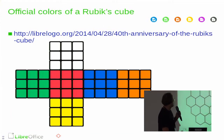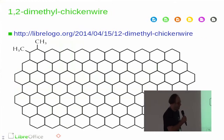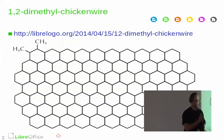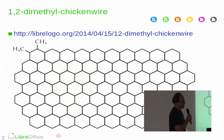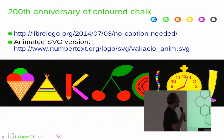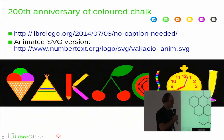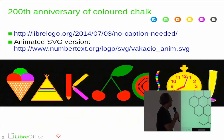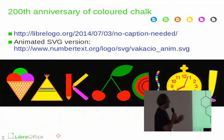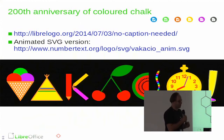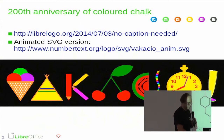Another interesting example is the 1,2-dimethyl chicken wire molecule, which started as a joke but has since been synthesized — so it's now a real molecule that it's possible to create. The high-definition vector graphics of it was also put on Wikipedia.